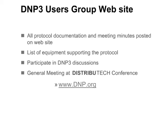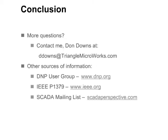The D&P user group holds a general meeting each year at the Distributech conference. This presentation provided a high-level overview of D&P3. For more information, consider joining the D&P user group and downloading the complete set of documentation. The D&P user group can be found at www.dnp.org.